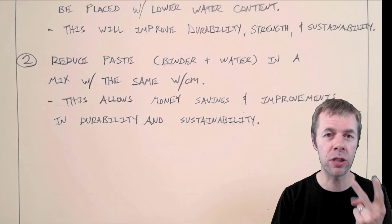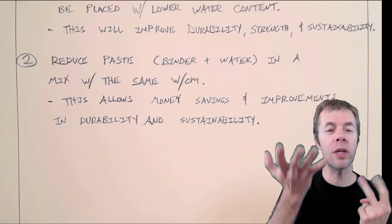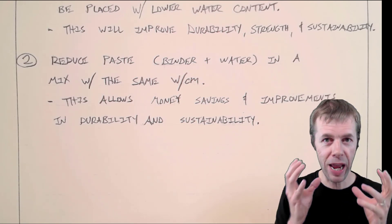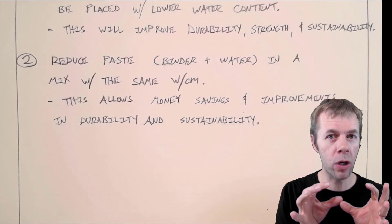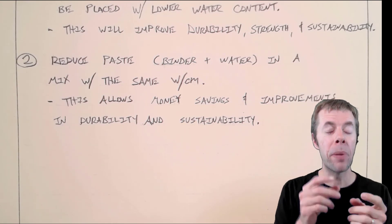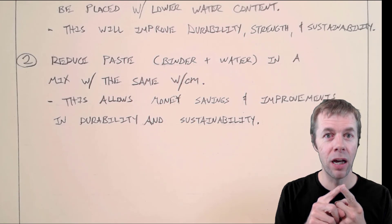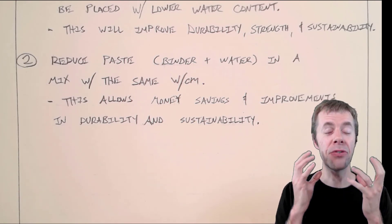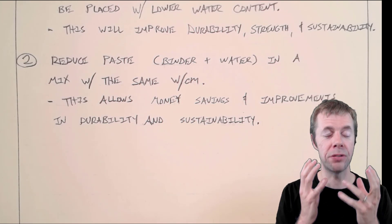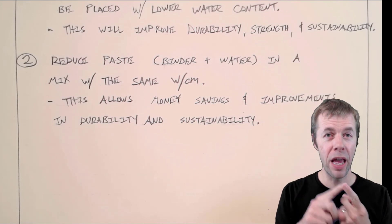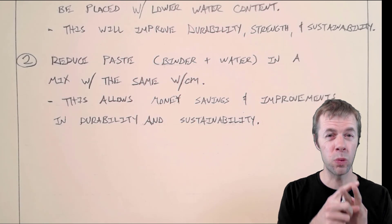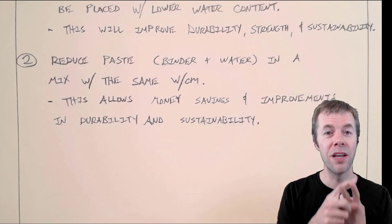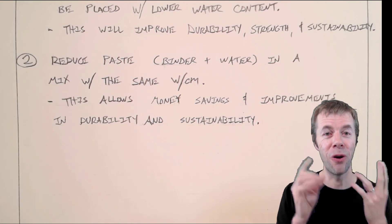Let's say I have a mixture that I've designed that I'm happy with. Everything is great. My slump is good. My water to cement ratio is where I want it to be. I can reduce my paste content. I can reduce the amount of cement and water, increase the amount of rock and sand, and still get a workable mix - the same workability I had before, but I can save money, a lot of money. And this also still allows us to pay attention to durability and sustainability because we're reducing the amount of cement that we use.